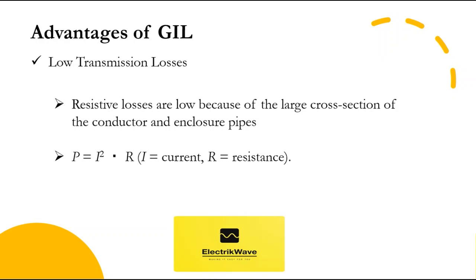GIL has low transmission losses. Resistive losses are low because of the large cross section of the conductor and enclosure pipes. Typical GIL resistances are 6 to 8 milliohm per kilometer, depending on the outer diameter — 500 mm or 600 mm — and the wall thickness of the enclosure and conductor pipe, 6 mm to 15 mm. The transmission losses are related to the square of the transmitted current as P = I²R. When the current rating is high, as it is for GIL — for example 3,150 ampere — the effect of low transmission losses is high. The losses through the insulating gas are negligibly small.